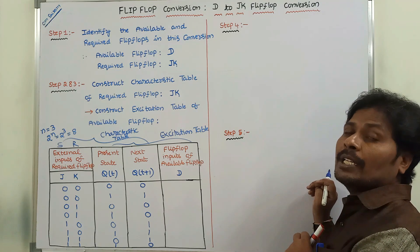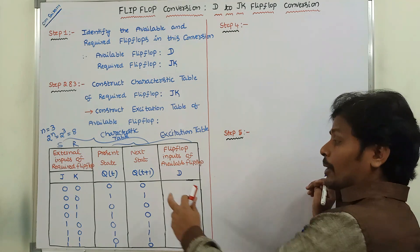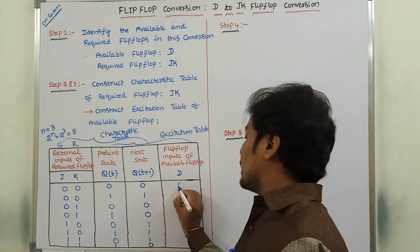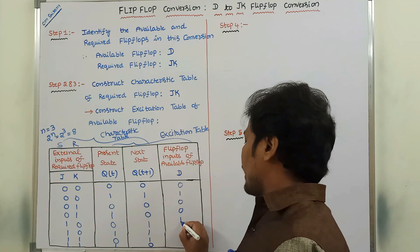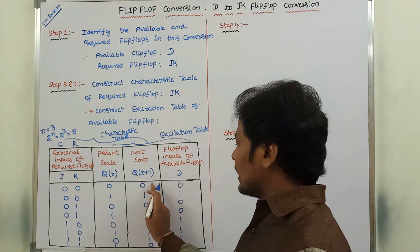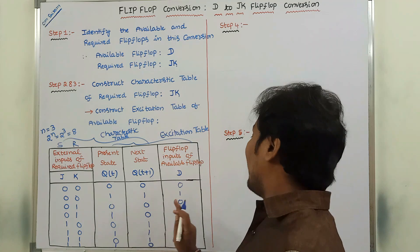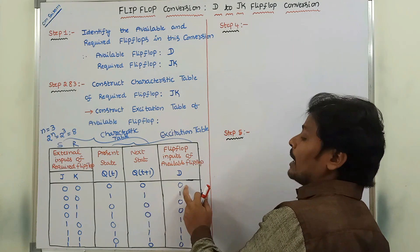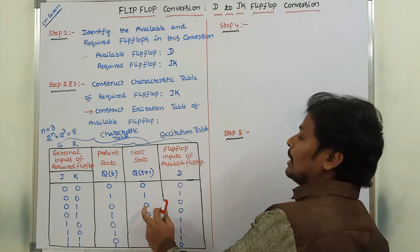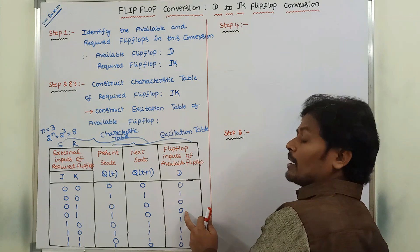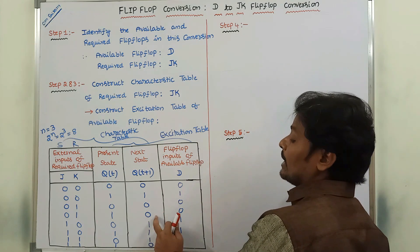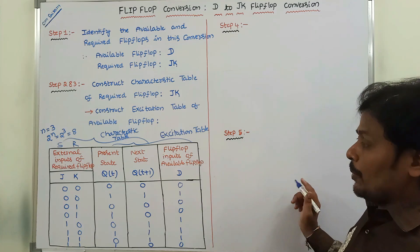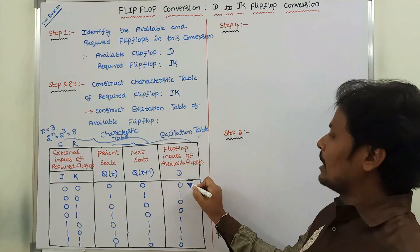How are we getting the excitation table of D flip-flop? Whatever the next state values are there, the same values we are getting in the excitation table of D flip-flop. So we write: 0, 1, 0, 0, 0, 1, 1, 1, 0. Whatever the next state values are, those become the D input values. Q(T+1) value 0 means D value 0; Q(T+1) value 1 means D value 1. So these three columns represent the excitation table of D flip-flop and the other three columns represent the characteristic table of JK flip-flop.